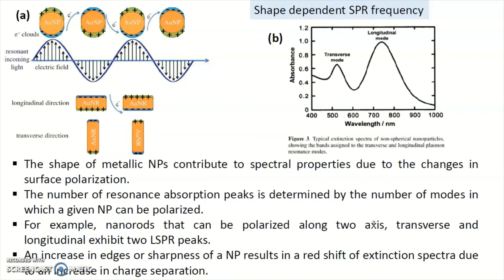Now let us understand what is shape-dependent SPR frequency — surface plasmon resonance frequency. If you change the shape of the nanoparticle, the color or extinction coefficient of the nanoparticle will change. When the size of the gold nanoparticle is smaller than the wavelength of the electromagnetic radiation, the whole electron cloud present in the gold nanoparticle starts to oscillate and there is formation of localized surface plasmon resonance.